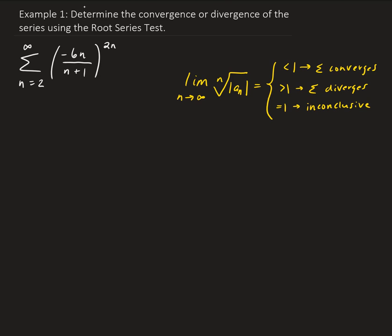So let's go ahead and figure out what this limit is. In this problem, the nth term is minus 6n over n plus 1 all to the 2n power.